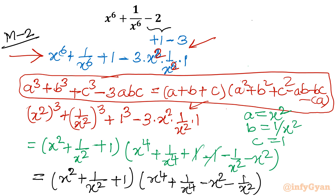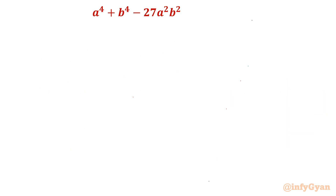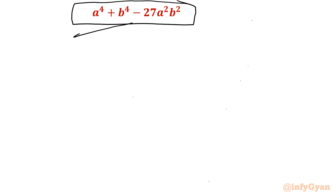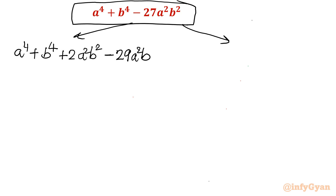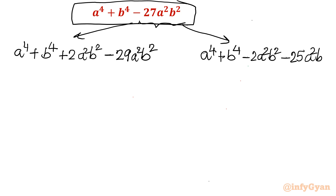Now let's take the second problem. This is the third case — it is the second problem but method three or four. It is the conventional method. I will solve this using two approaches. We can think of it as: a⁴ + b⁴ + 2a²b² - 29a²b² for the first approach. The second approach: a⁴ + b⁴ - 2a²b² and then the total gives minus 27a²b², so minus 25a²b².